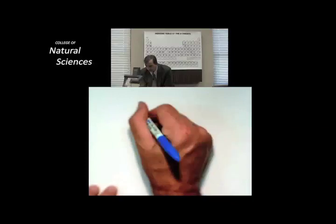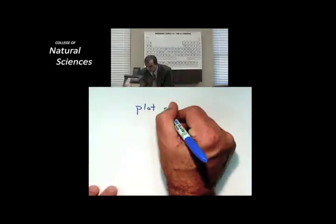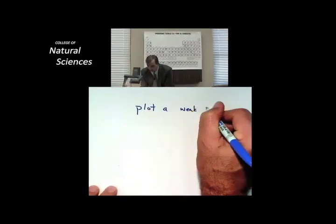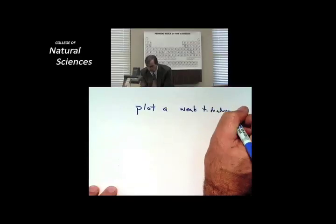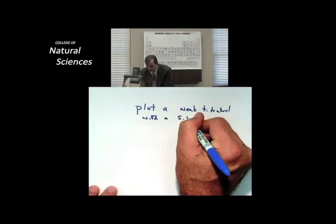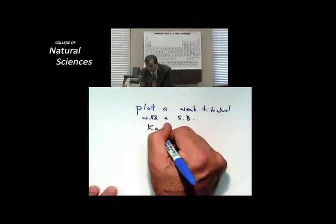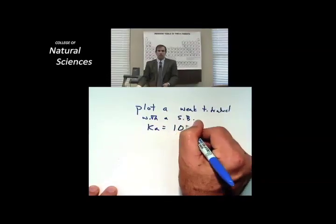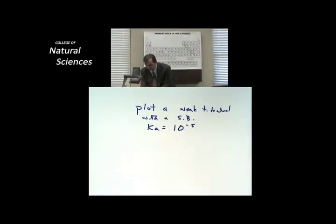Plot a weak acid titrated with a strong base. Ka is equal to 10 to the minus 5. So I'm told this. Here goes. So we do a plot.